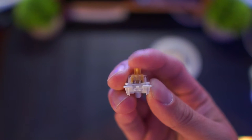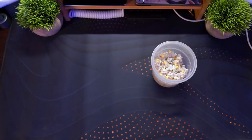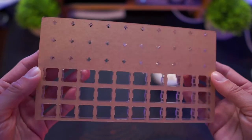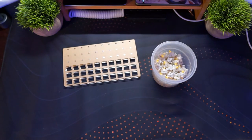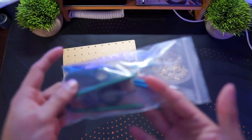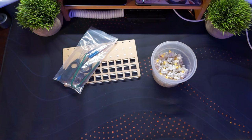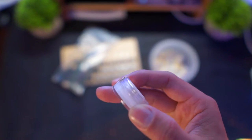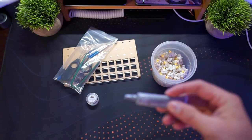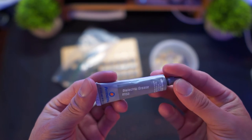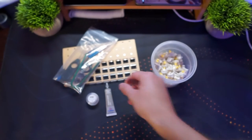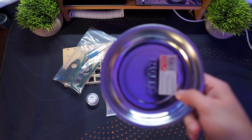Next up, we have our switches. I decided to go with the Gateron yellow linear switch. Lube station slash keyswitch holder. The kit that it came with, including a couple paint brushes, keycap puller, tweezers. Krytox 205 grade zero. Permatex dielectric grease. And a magnetic part tray.